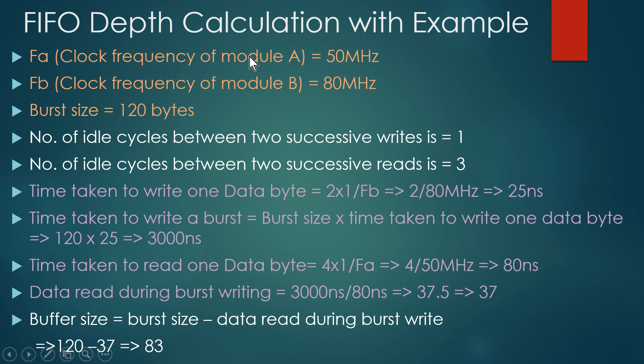Let us see one more example. The frequency of module A (FA) is 50 MHz and the frequency of module B (FB) is 80 MHz. The burst size is 120 bytes. The number of idle cycles between two successive writes is 1, and the number of idle cycles between two successive reads is 3 — meaning reading speed is further reduced.